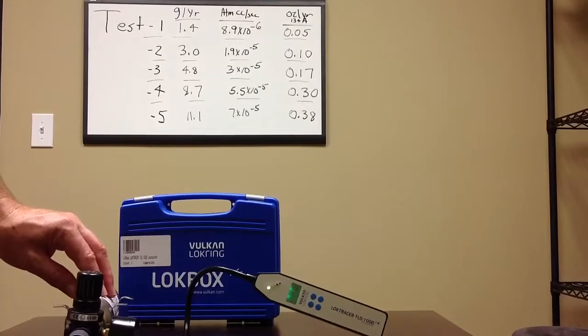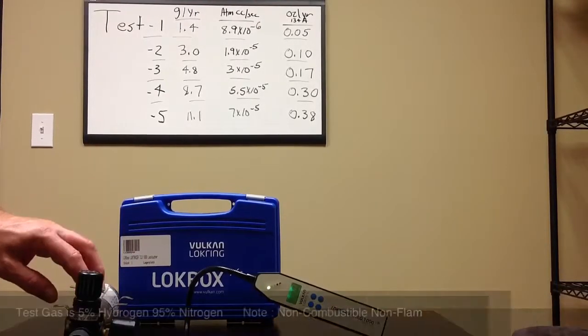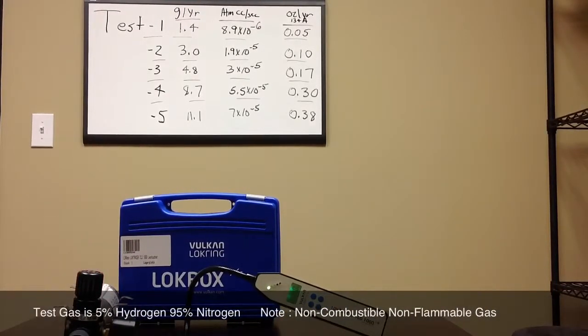I've got a certified calibrated leak source here that contains 5% hydrogen and 95% nitrogen. We're going to do five test points today. I've got the test points here on the board so you can follow.